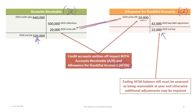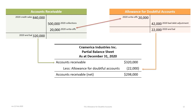At the end of the year, the ending balance in the AFDA still has to be assessed for reasonableness, and if it's not reasonable, additional adjustments may be required. It's important to use professional judgment to determine whether the ending balance of $22,000 is reasonable given sales history and collections. On the balance sheet as at December 31st, we have receivables of $320,000 less the allowance for doubtful accounts of $22,000, giving a net receivable of $298,000.